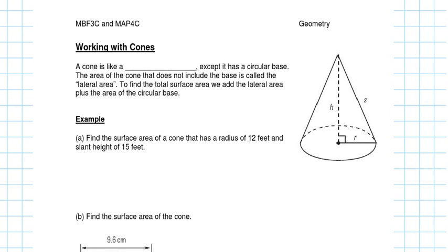A cone is like a pyramid but with a circular base. The area of the cone that does not include the base is called the lateral area — similar to what we discussed with cylinders. So in a cone you have a circular base and the lateral area is the curved top part. That's actually what you get with a typical ice cream cone — just the lateral area, not the circle.